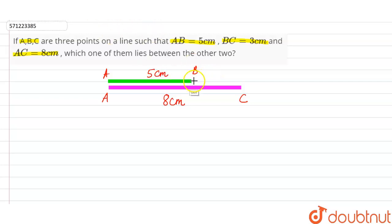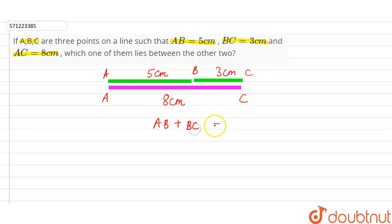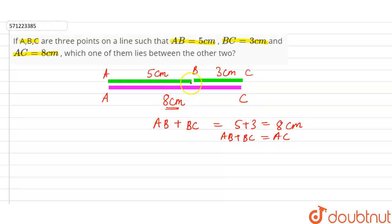The distance between B and C is equal to 3 centimeters. Now we can observe that AB plus BC is equal to 5 centimeters plus 3 centimeters, which is equal to 8 centimeters.